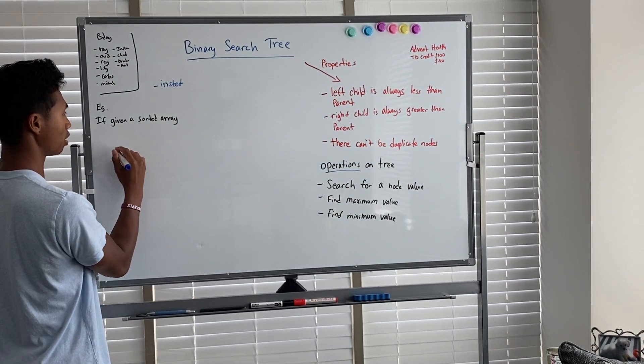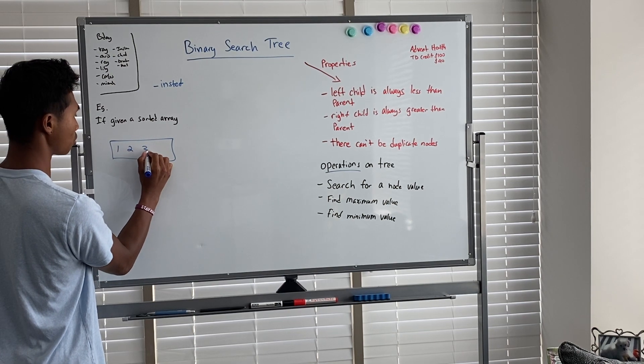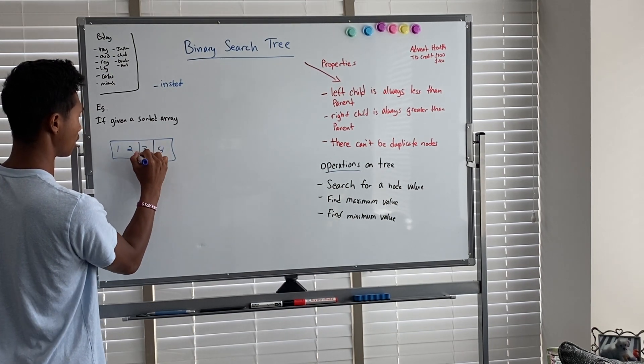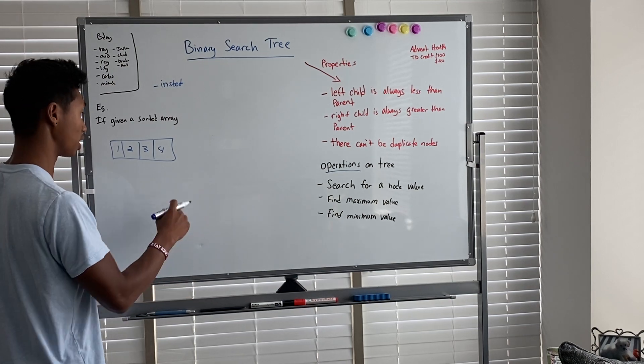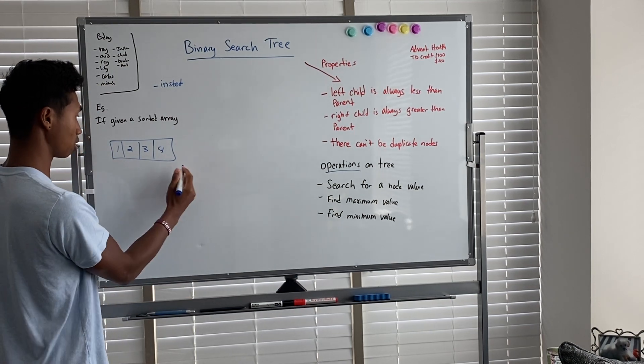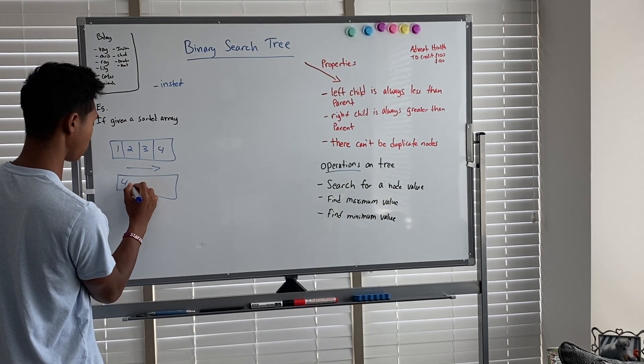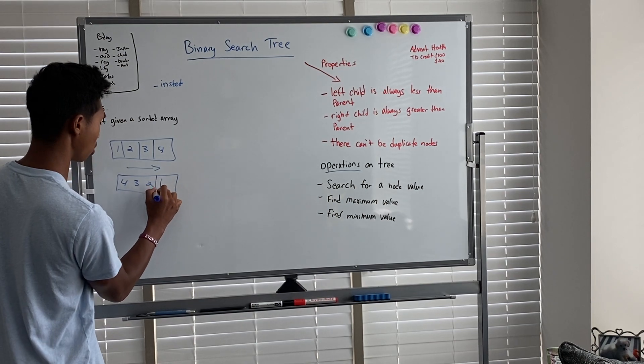So if we took an array, a sorted array of say one, two, three, four, and then we're going to take the reverse of that. So this is an array that's in order, in increasing order. And then we're going to look at an array that's decreasing, so four, three, two, one.